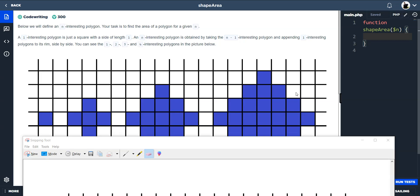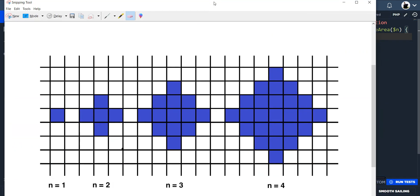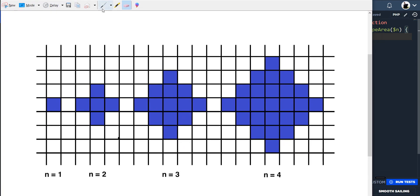This one is shape area and it's in PHP. Below we will define an interesting polygon. Your task is to find the area of a polygon for a given n. So I'm going to explain how to find the area of the interesting polygon and then we're going to move on to the solution.